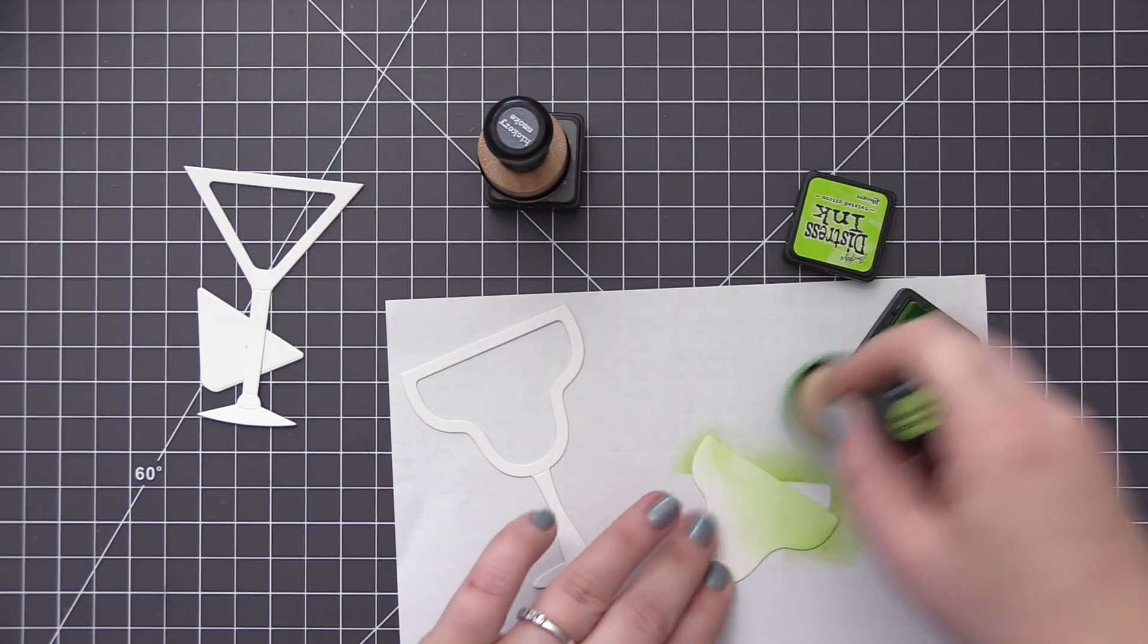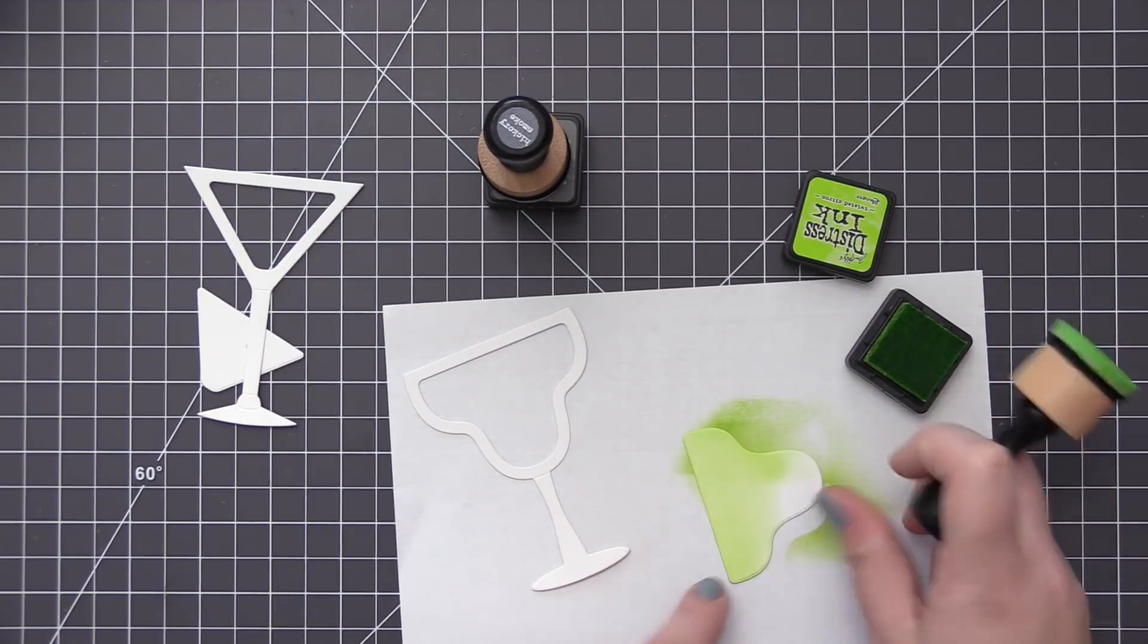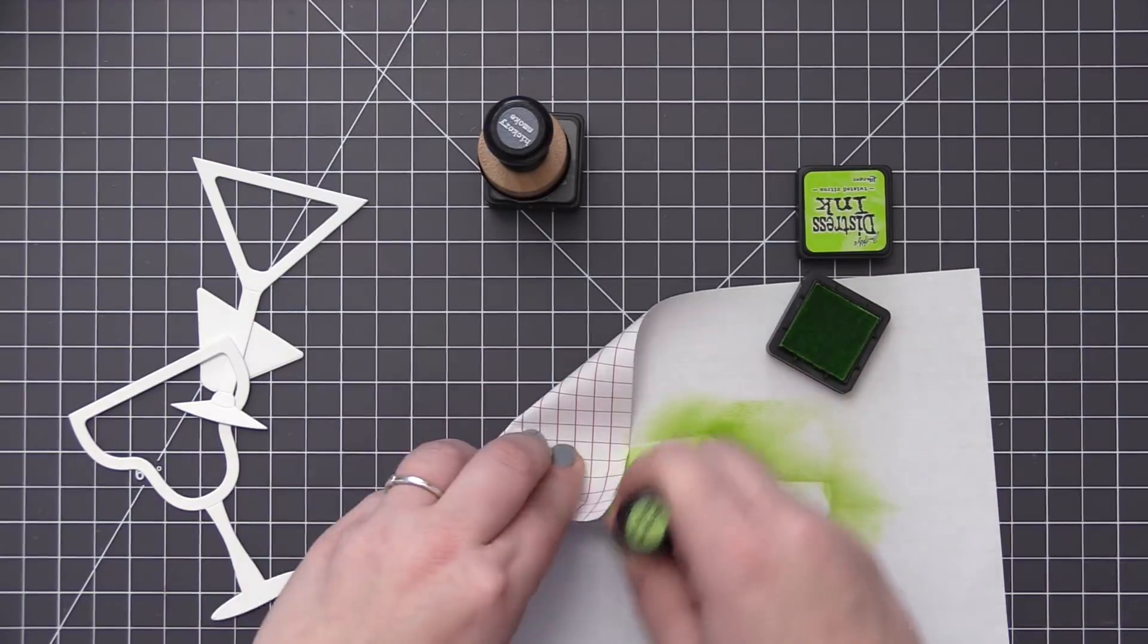So I've die cut them both from white cardstock and for the martini glass we're using some twisted citron distress inks. This is just a really great lime colored ink that's going to pair really nicely with that margarita glass.